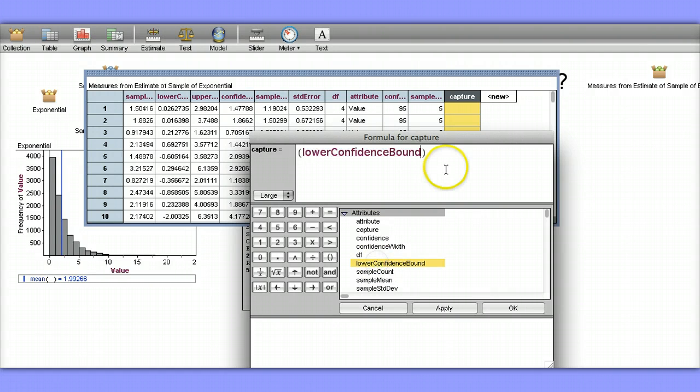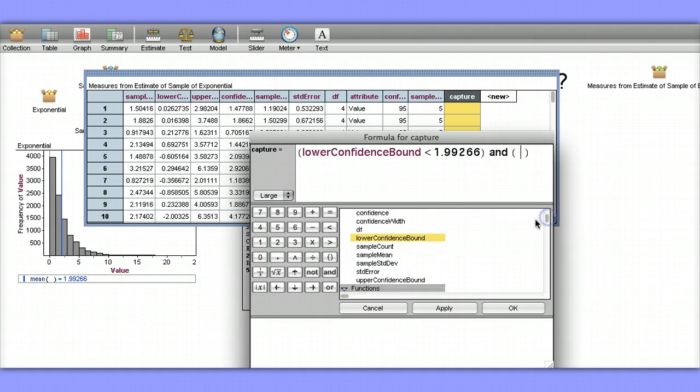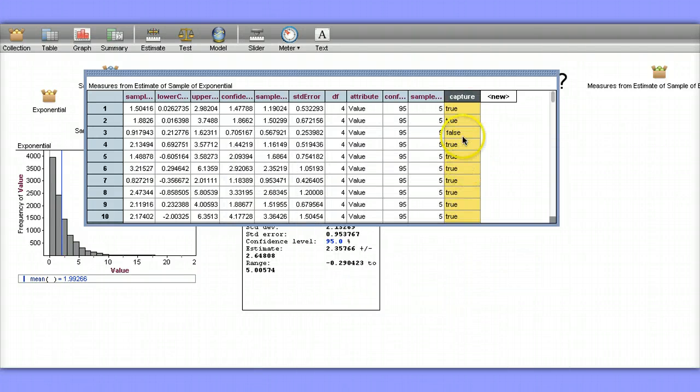So the way I'm going to do this is I'm going to use Boolean logic. I want to have the lower confidence bound be smaller than the mean of 1.99266, and at the same time, I want the upper confidence bound to be bigger than 1.99266. We'll say okay, and we see there's some trues and falses.